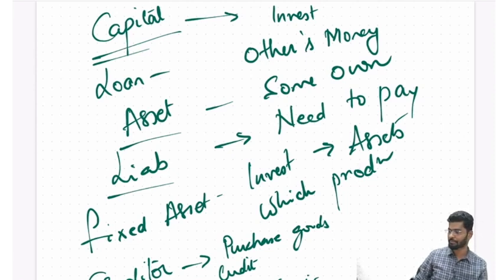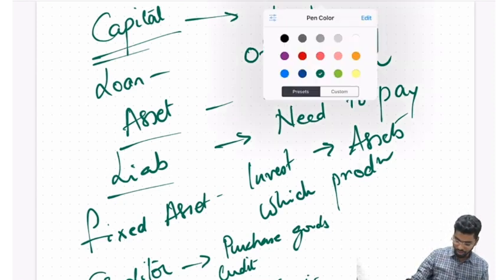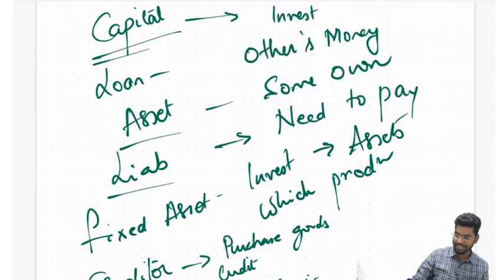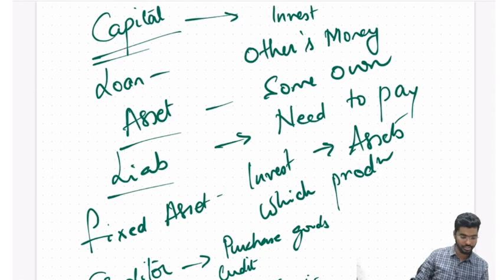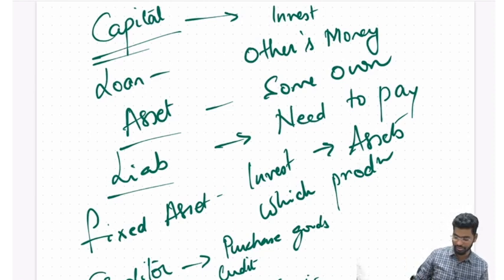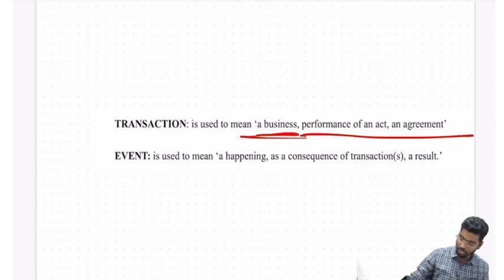Now, where does accounting all begin? Accounting begins with identifying a transaction and an event. A transaction means a business performance of an act or an agreement.